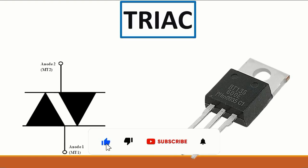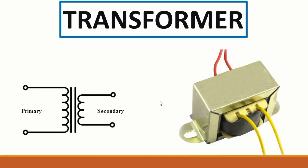Next we have the triac. This is basically the triac and its symbol. As you can see, it has two anodes.